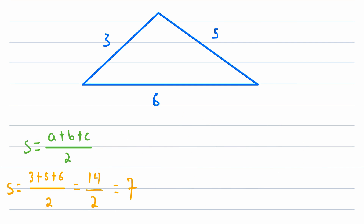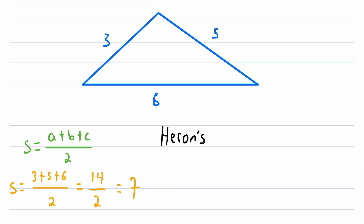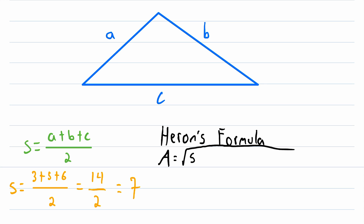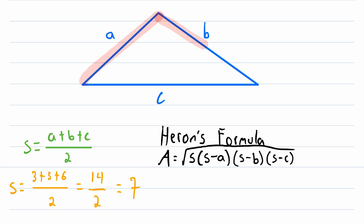The semi-perimeter might seem like a bit of a strange thing to be interested in, but it actually has a variety of uses. One of the first ones I think most people encounter is Heron's formula for the area of a triangle. If the sides of our triangle are a, b, and c and its semi-perimeter is s, then Heron's formula tells us that the area of the triangle is equal to the square root of s multiplied by (s minus a), multiplied by (s minus b), multiplied by (s minus c). So that's just an example of when the semi-perimeter comes in handy.